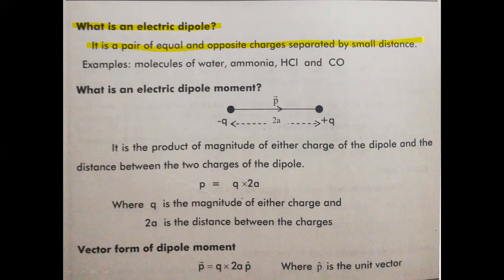Examples of electric dipoles include molecules of water, ammonia NH3, HCl, and carbon monoxide CO.